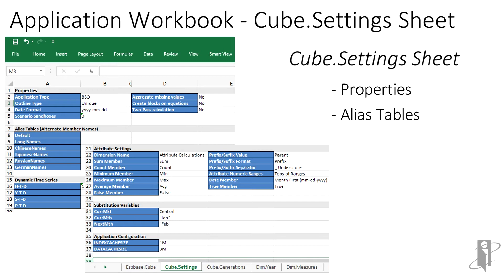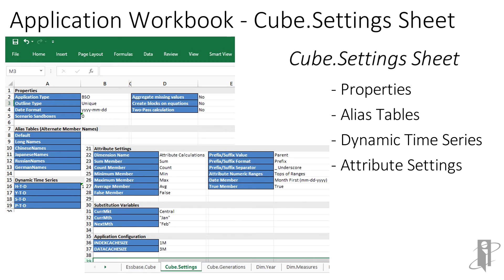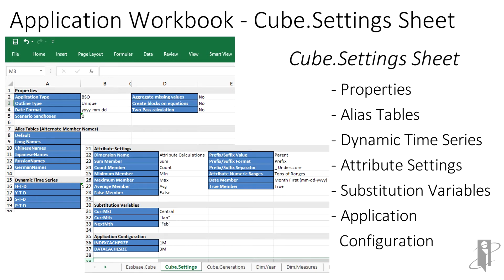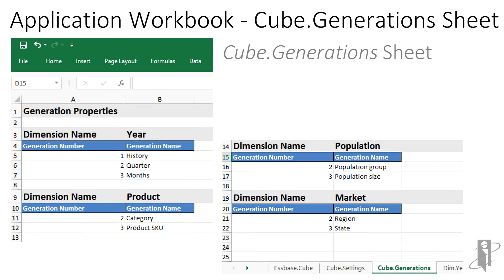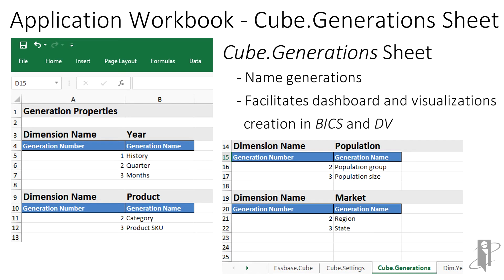The cube.settings sheet defines the cube properties, a listing of the alias tables, dynamic time series settings, attribute settings, substitution variables, and application configuration. The cube.generation sheet defines the names of the generations of each dimension. Naming the generations facilitates the creation of dashboards and visualizations in BICS and DV.